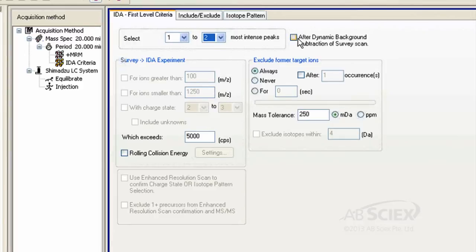Activate DBS and set your IDA triggering threshold to 500 counts per second. This just means that any MRMs that exceed this intensity will trigger an EPI spectrum.